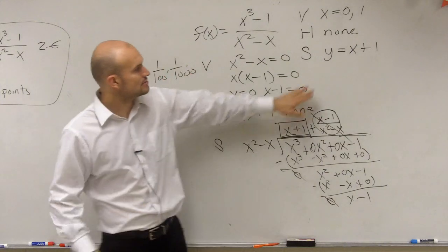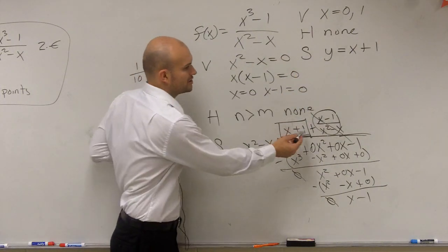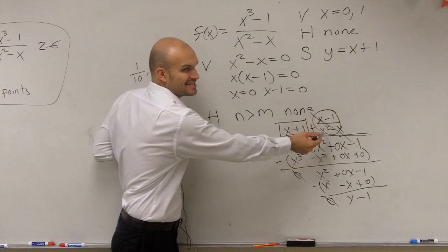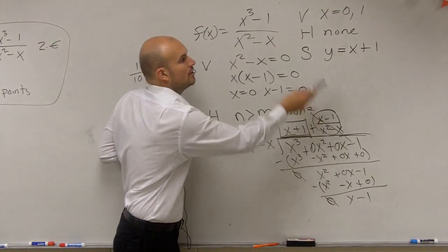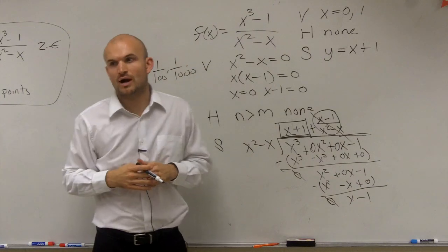OK. So you guys see how we get there? So your slant asymptote, all you're going to do is you're going to take your quotient, not dealing with your remainder because your remainder actually, it goes to 0. And that's going to be your slant asymptote, y equals x plus 1.